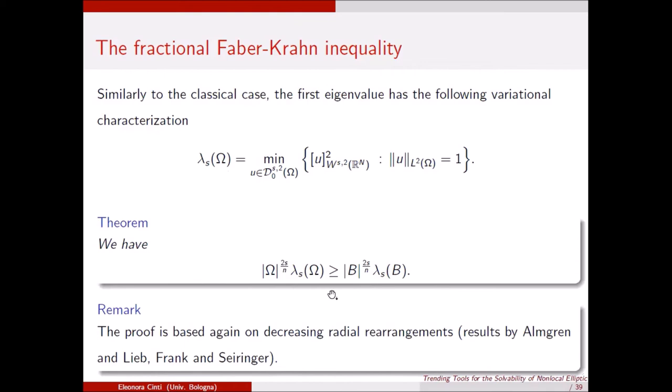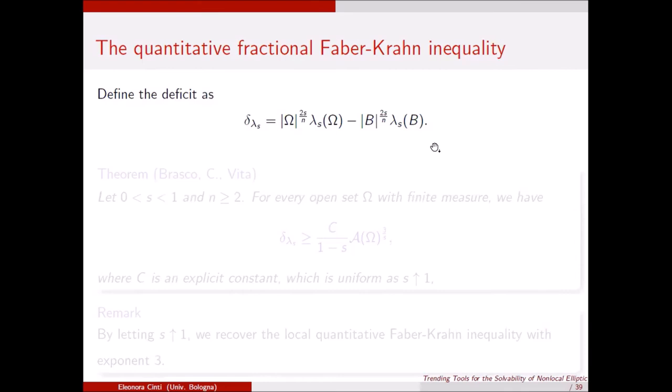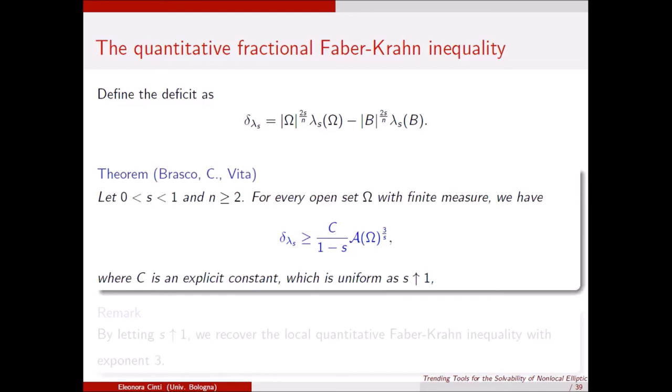We now want to add a stability result for this fractional Faber-Krahn inequality. We introduce the natural deficit — the difference between left and right side — and the result in collaboration with Lorenzo Brasco and Stefano Vita is: the deficit controls the Fraenkel asymmetry of omega to the power 3/s, with an explicit constant that behaves like 1/(1-s) as s goes to 1. So you can pass to the limit as s goes to 1 and recover the local quantitative Faber-Krahn inequality with exponent 3.